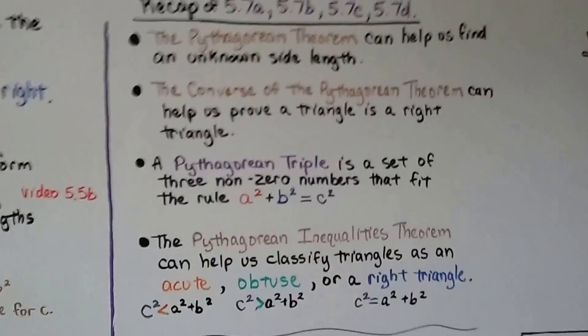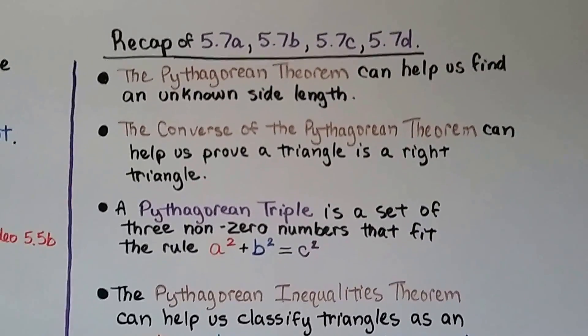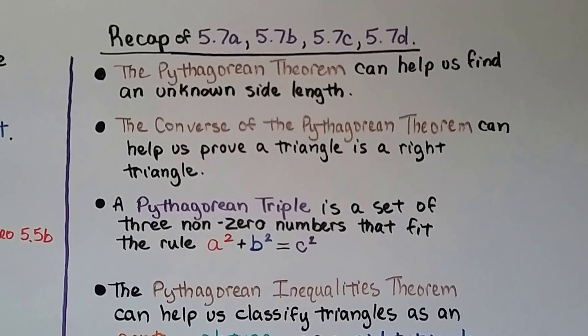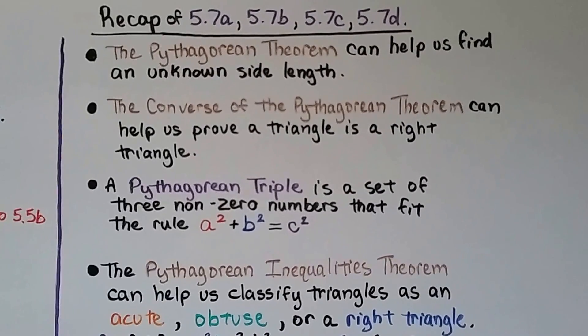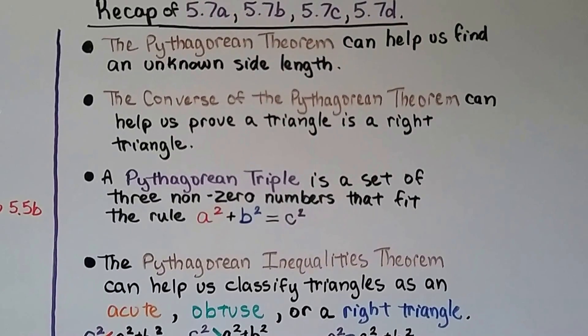So we've had four lessons for 5.7 from a through d. Here's a recap of them. We learned the Pythagorean theorem can help us find an unknown side length. We learned the converse of the Pythagorean theorem can help us prove a triangle is a right triangle.